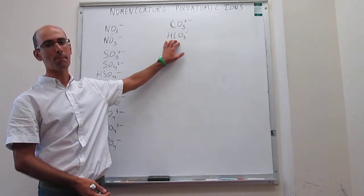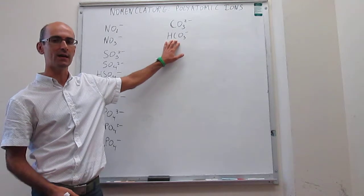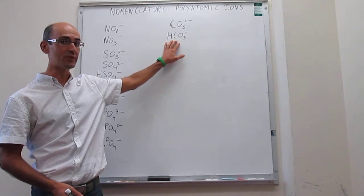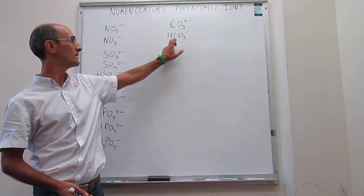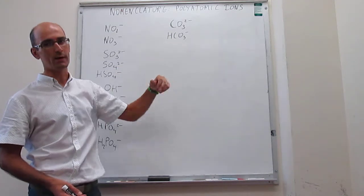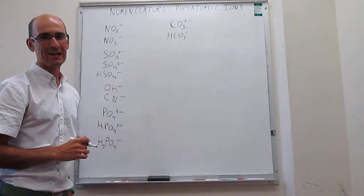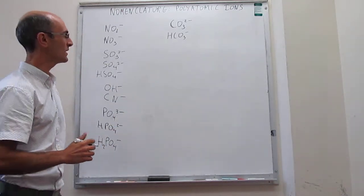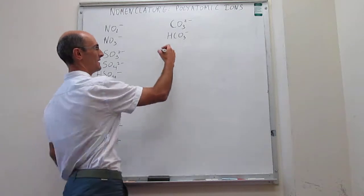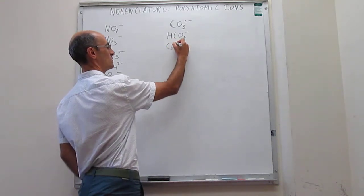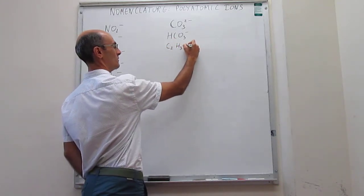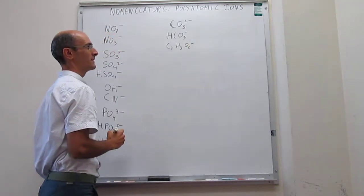This component is also known as bicarbonate, which is not a systematic name, but it's a very common one. So carbonate and hydrogen carbonate or bicarbonate. Next we name something that is called an organic ion, and it is called acetate. Acetate has a formula C2H3O2-. That is acetate.